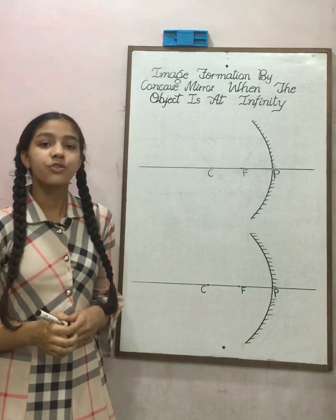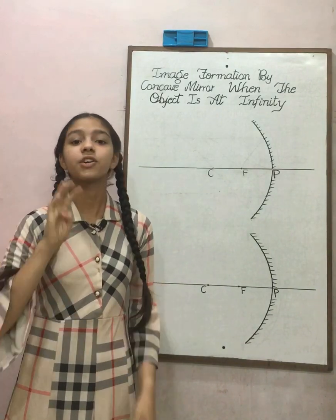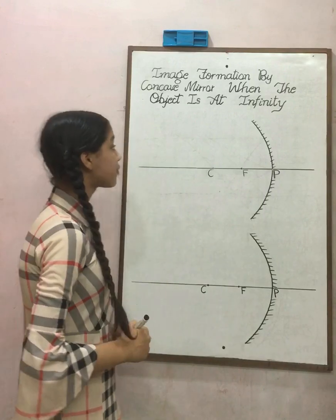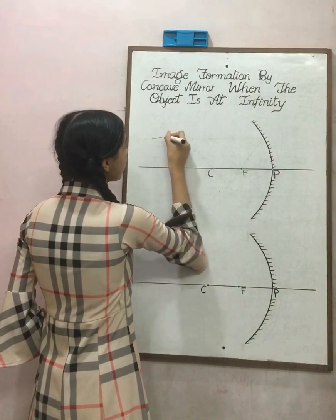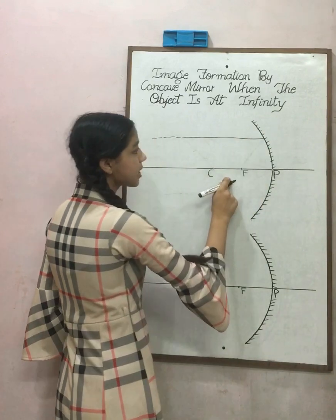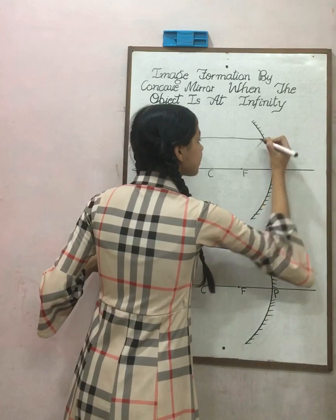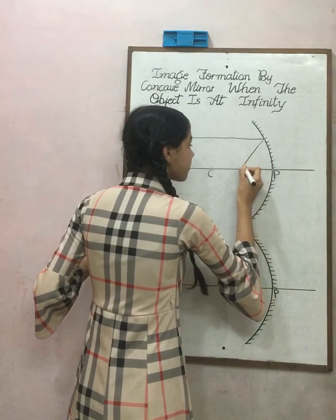Before we draw the ray diagram of the image, we first have to remember the four conditions. The first condition is, when the ray of light comes parallel to the principal axis and then strikes at the mirror, then it reflects and goes back from the focus.